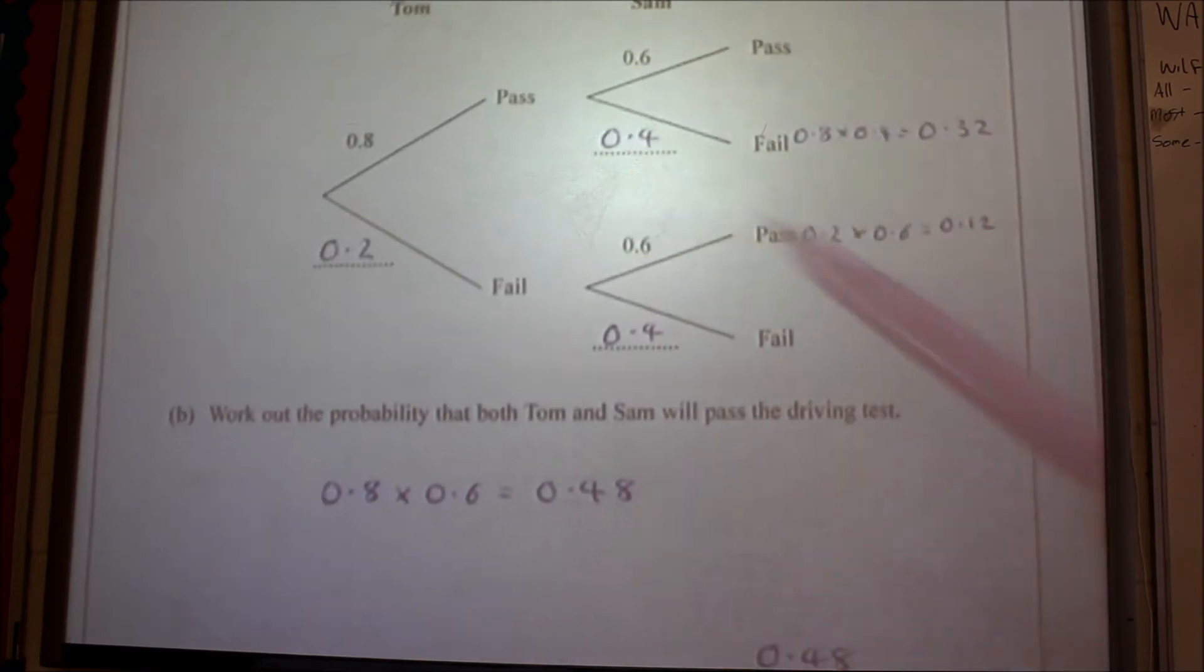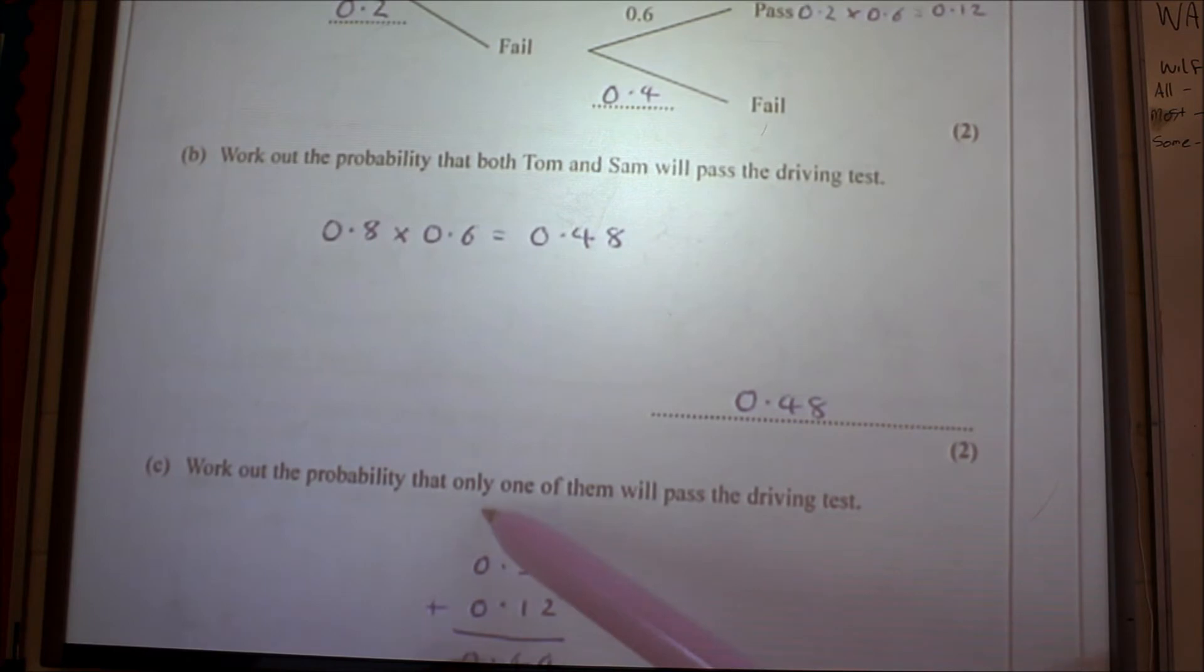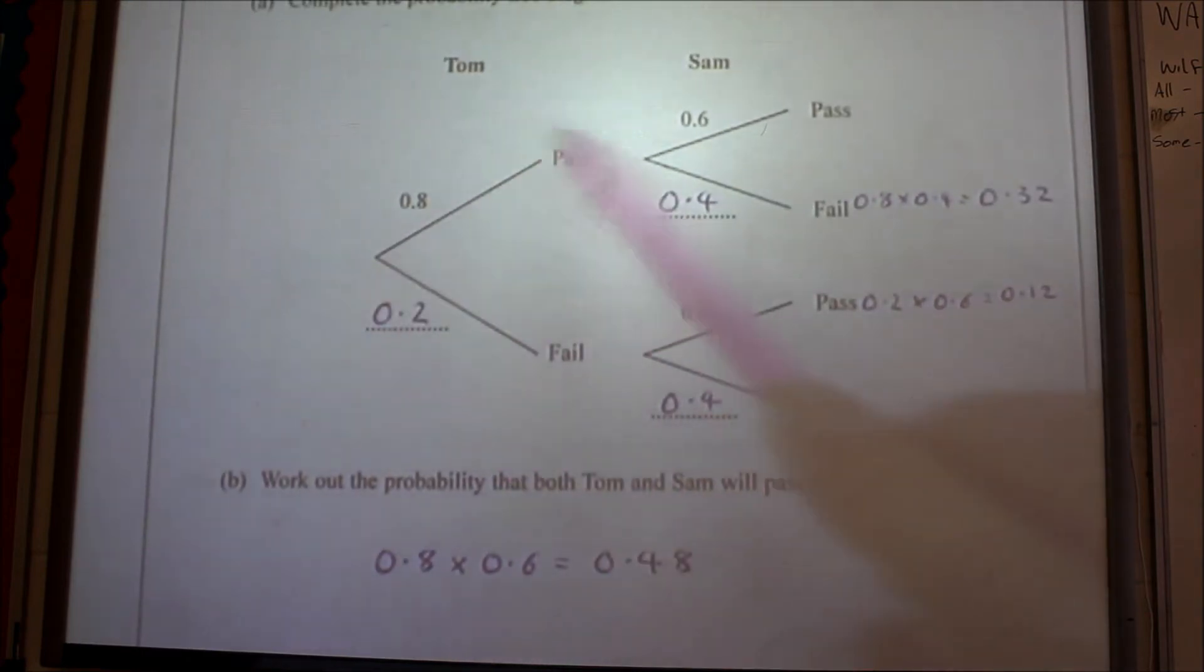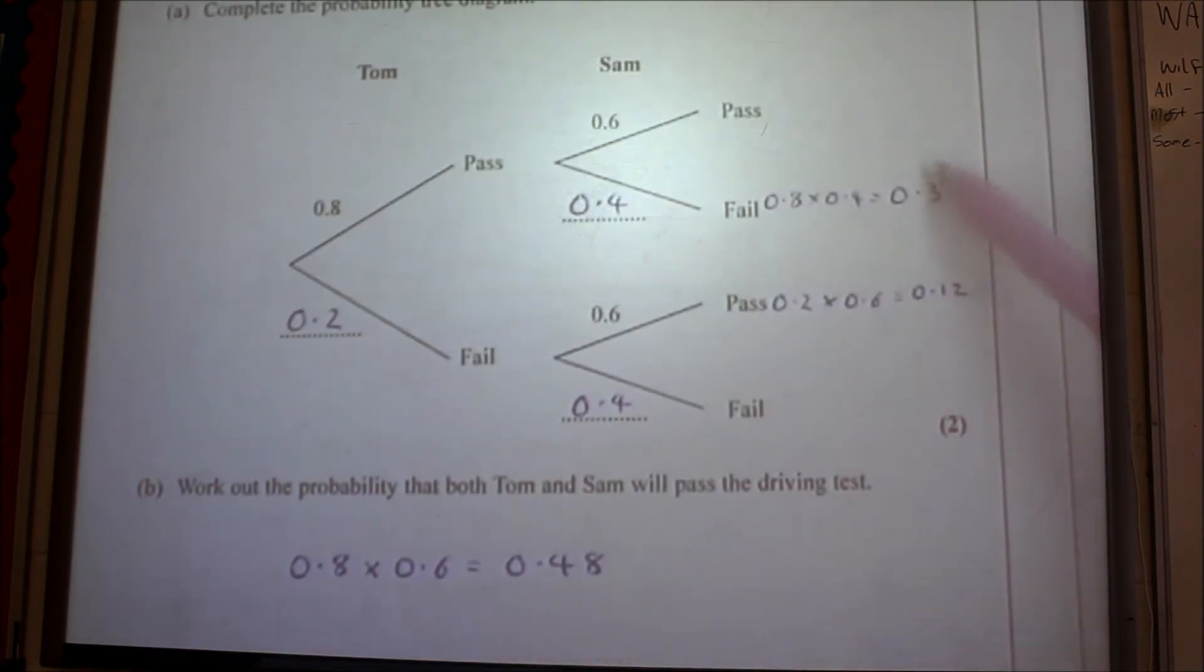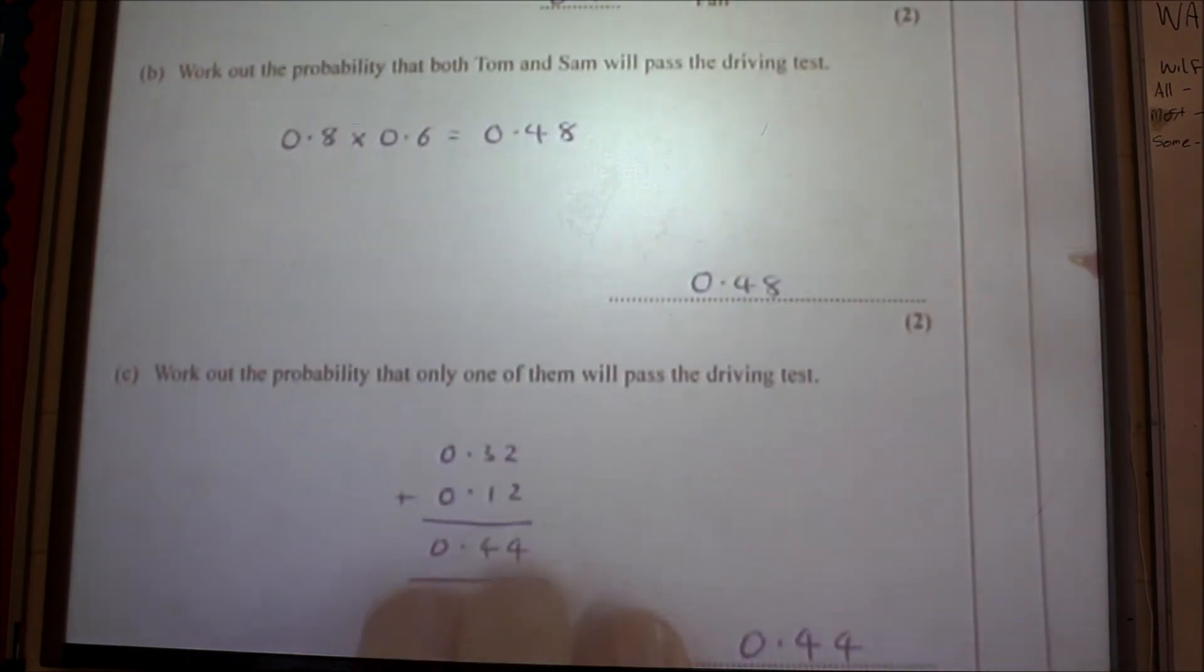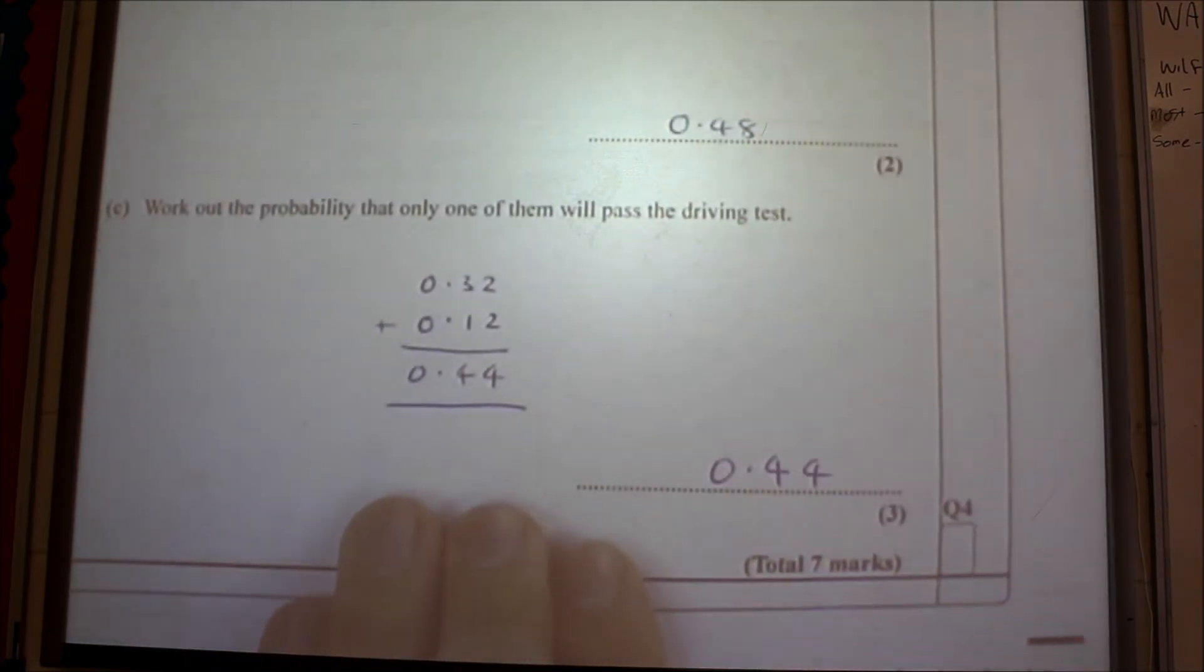Work out the probability that one of them will pass their driving test. Okay, if it's only one of them, that means only one of them will pass their driving test. So it's a pass and a fail, or a fail then a pass. So I've worked them out here, and you add downwards, so that's 0.44. There you go.